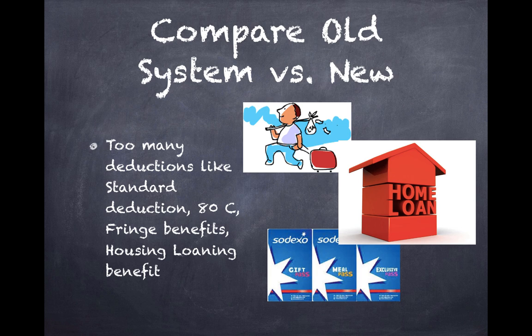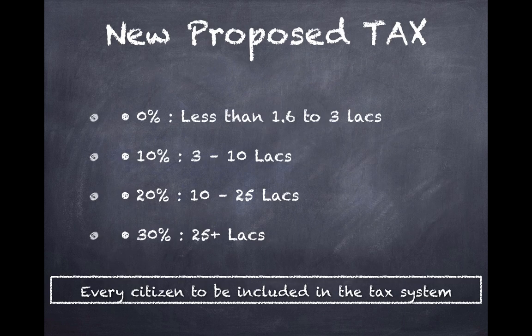From a housing loan perspective, 1.5 lakhs is not a big amount anymore and is no longer a meaningful incentive — it's kind of a false incentive. There are other deductions like LTA and several others which basically add to the administrative cost of any office. What has been proposed is that every person who earns income — including perhaps citizens not currently included, like farmers — will be included in this taxation system.